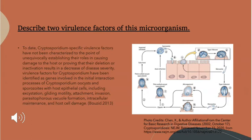The question asks to describe two virulence factors of this microorganism. To date, Cryptosporidium-specific virulence factors have not been characterized to the point of unequivocally establishing their roles in causing damage to the host or proving that their deletion or inactivation results in a decrease of disease severity. Virulence factors for Cryptosporidium have been identified as genes involved in the initial interaction process of Cryptosporidium oocysts and sporozoites with the host epithelial cells, including excystation, gliding motility, attachment, invasion, parasitophorous vacuole formation, intracellular maintenance, and host cell damage.